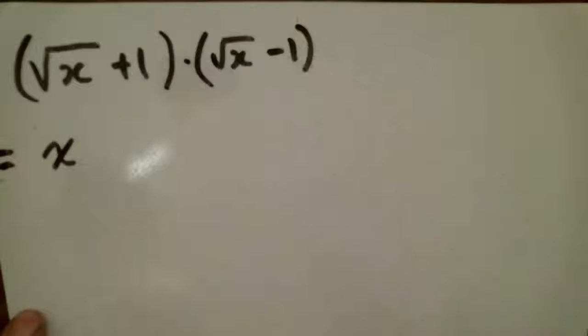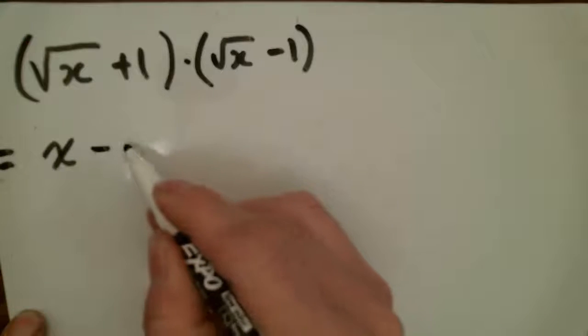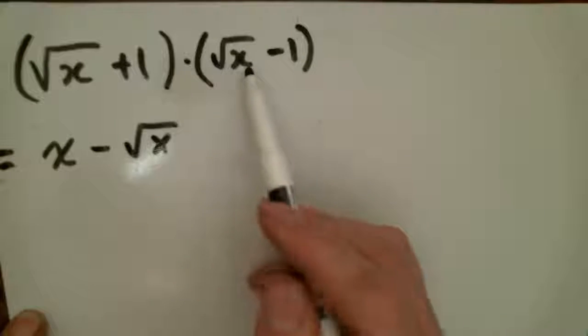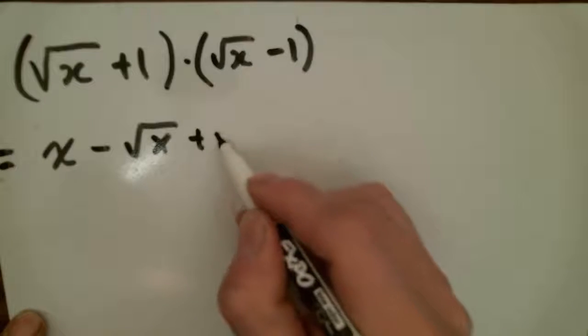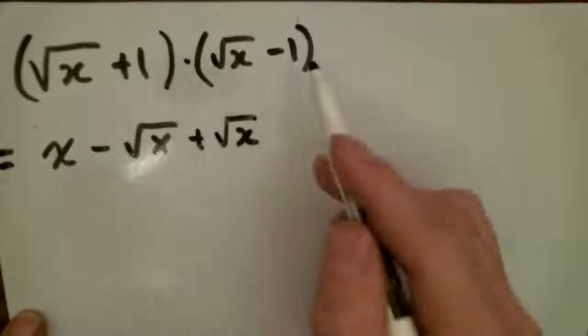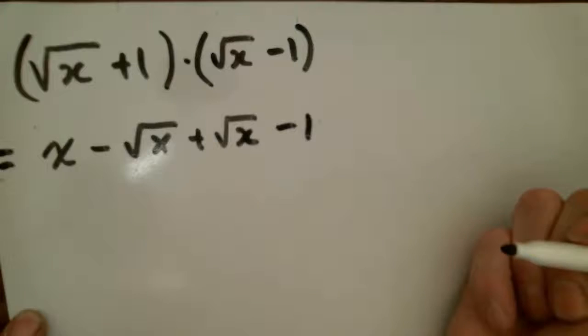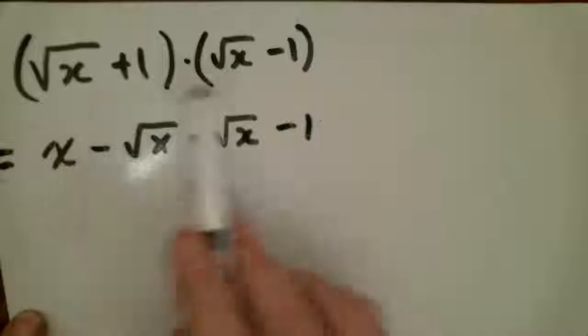The square root of x times negative 1 is the negative square root of x. 1 times the square root of x is positive square root of x. And positive 1 times negative 1 is negative 1. And so you'll notice by multiplying by the conjugate,